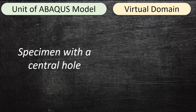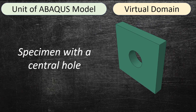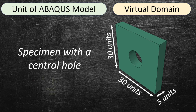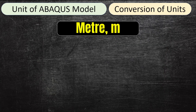The virtual domain we're going to use to illustrate this is a specimen with a central hole, which has a depth of five units and a width and length of 30 units. We describe the length in terms of 'units' because we're not deciding on the unit system immediately — this unit could be meters, millimeters, or micrometers. The hole has a diameter of 10 units.